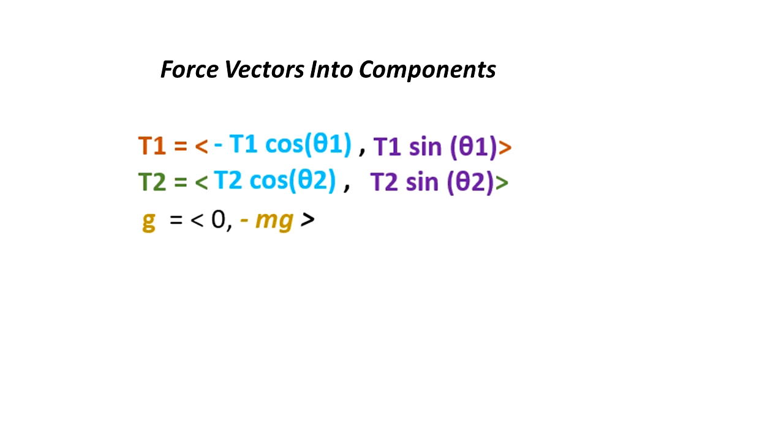Now we have the forces broken into components. So T1 and T2 they have the x component and the y component, and the force exerted by gravity is also broken into components. The x component is zero and the y component is negative mg.